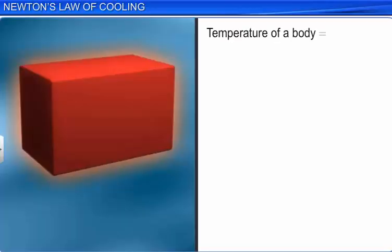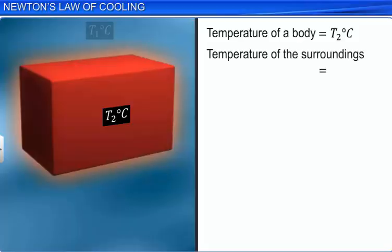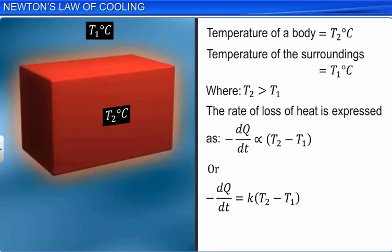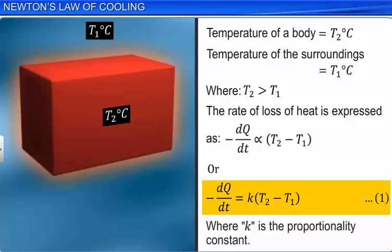If a body is at a temperature T2 degrees Celsius and its surroundings are at a temperature T1 degrees Celsius, where T2 is greater than T1, then the rate of loss of heat is expressed as: minus dQ by dT is proportional to T2 minus T1, or minus dQ by dT is equal to K into (T2 minus T1). Let this be equation 1, where K is the proportionality constant which depends on the area and nature of the body.